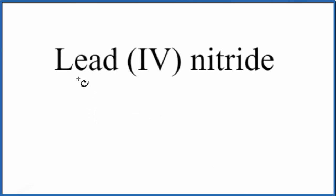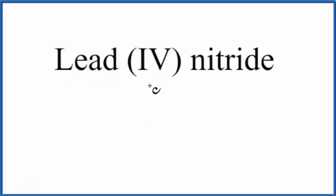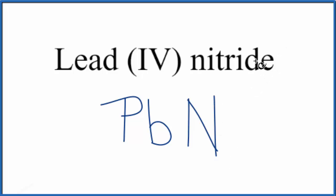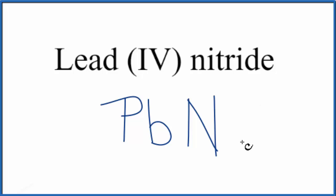If you're asked to write the formula for lead(IV) nitride, here's how you do it. First, write the element symbols: lead is Pb, and nitride — it has 'ide' at the end, which means it's just N for nitrogen. If it were 'ate' you'd have a polyatomic ion like NO₃⁻, but here we just have 'ide', so we write N.